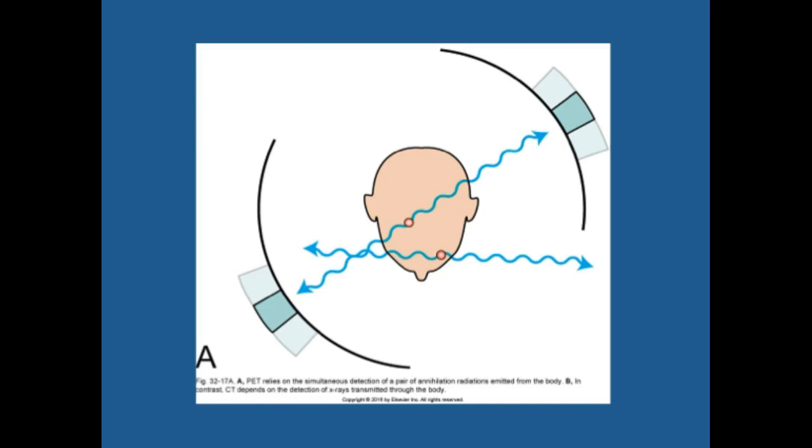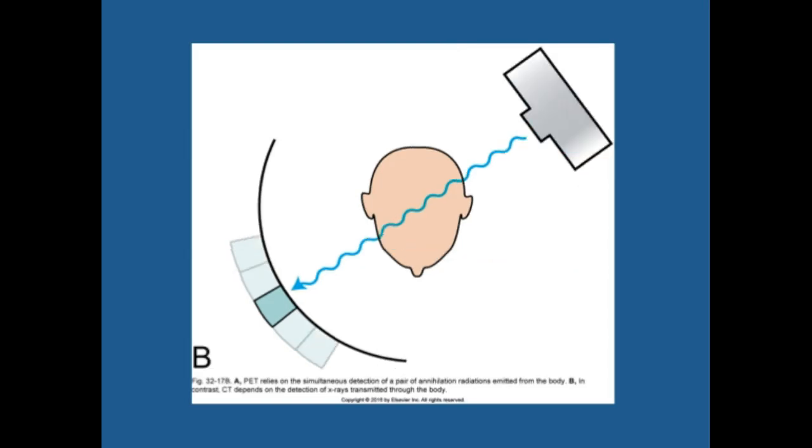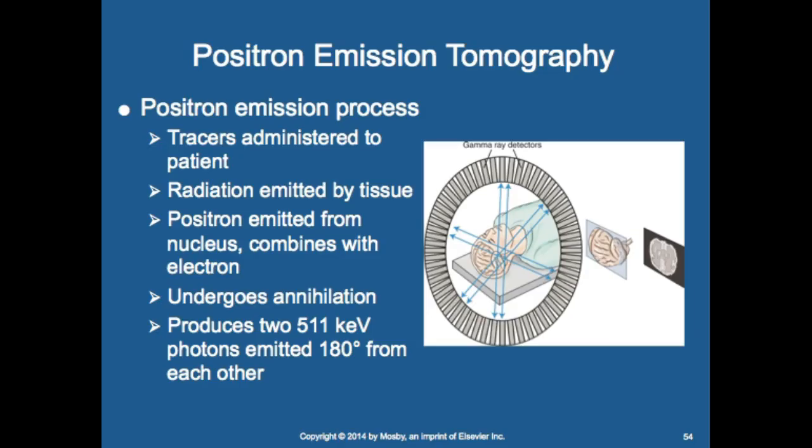In the positron emission process, tracers are administered to the patient. The positron emitted from the nucleus combines with an electron and undergoes annihilation, producing two 511 keV photons emitted at 180 degrees from each other. That is the basic principle of PET.